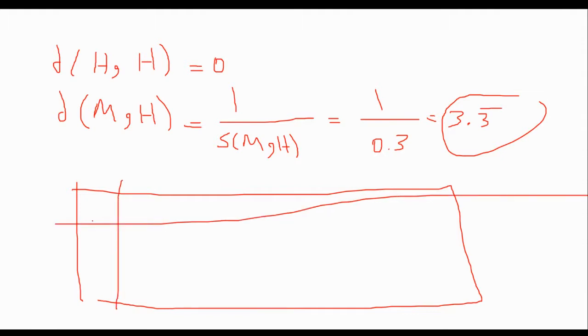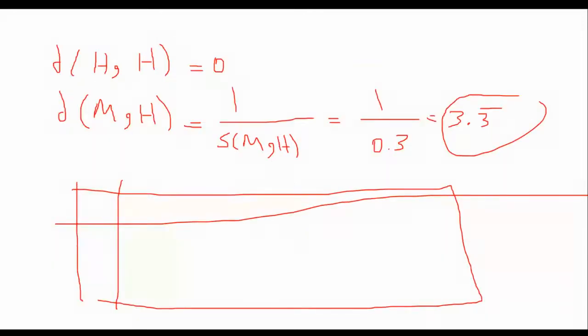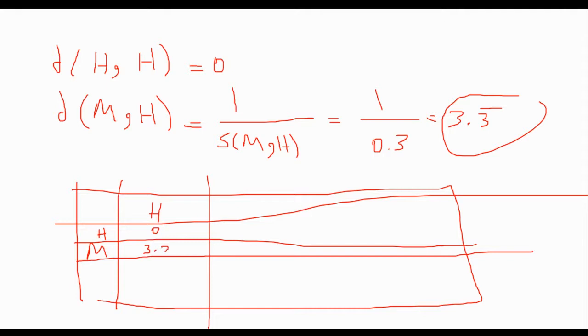Like again you will have for example here you had human human again the same situation, like here we have human here we have human here we have mouse, so you should fill the whole table again and then we reach finally the one that we had in the lecture and from that time is very easy to construct the phylogenetic tree.